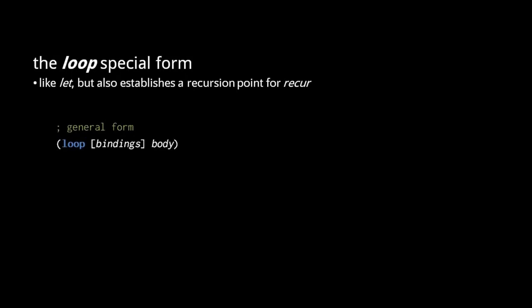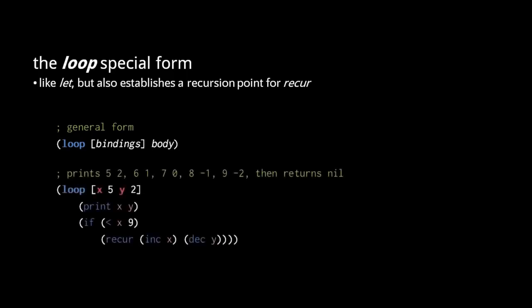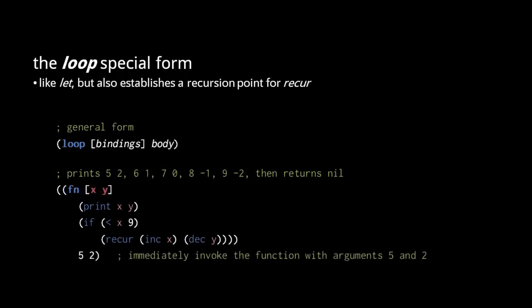The loop special form, just like let, creates local bindings to symbols for the duration of a body. The difference is that, like an fn form, the loop form establishes a recursion point for the recur form. A recur form in tail position of a loop body jumps execution back to the start of the loop with new values bound to the symbols. Effectively, loop and recur used together allow us to repeatedly iterate over a body of code without the bother of creating one-off functions just for the sake of looping. So in this example, in the first iteration of the loop, 5 is bound to x and 2 is bound to y, and in each successive iteration the value of x is incremented and y is decremented, until x is no longer less than 9.